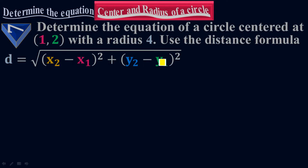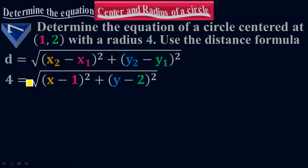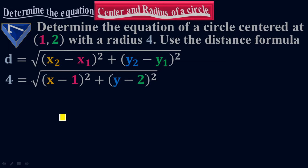My x sub 1 is h, my y sub 1 is k, so plugging x sub 1 equals to 1 and y sub 1 equals to 2. Therefore, I will have 4 equals to under root of x minus 1 to the whole square plus y minus 2 to the whole square. Remember, this distance is the radius — it is the formula which we use from the center of the circle up to the border of the circle.